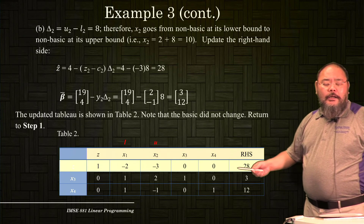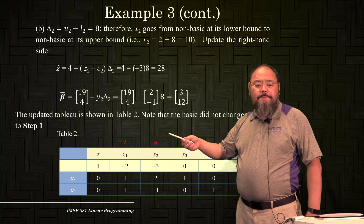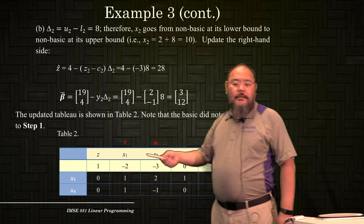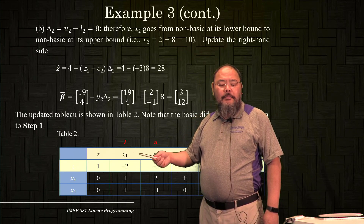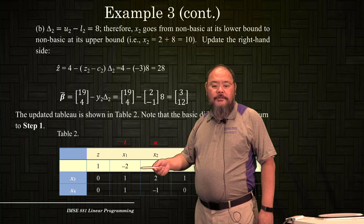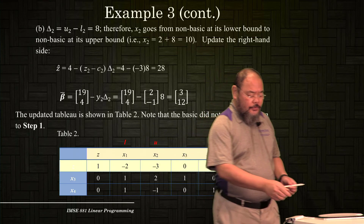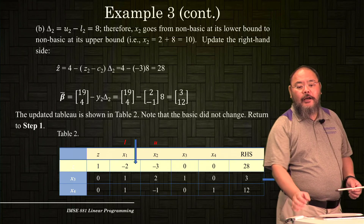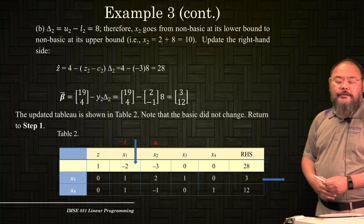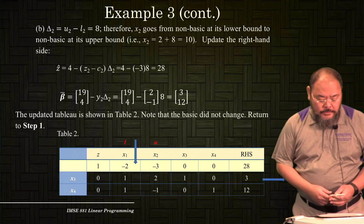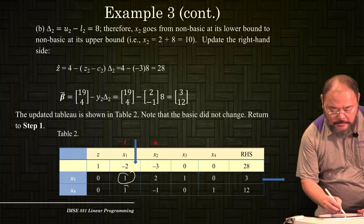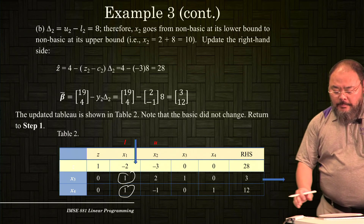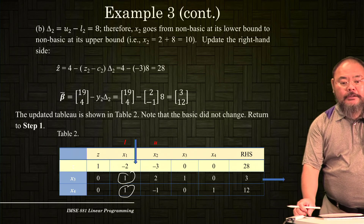In the new tableau, x2 is at its upper bound with a negative zj minus cj, so it won't be entering. However, x1 is a non-basic variable at its lower bound with a negative zj minus cj, so x1 is a candidate to enter the basis. We perform the minimum ratio test. With two positive entries in the yk column, we identify x3 as the leaving variable.